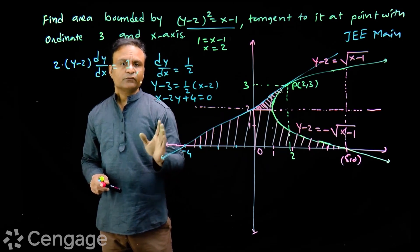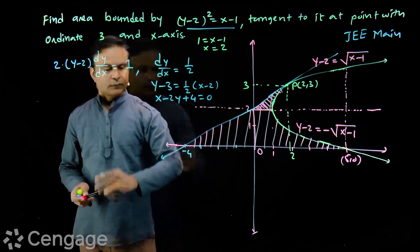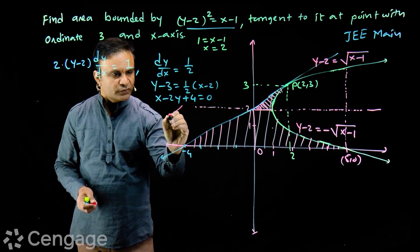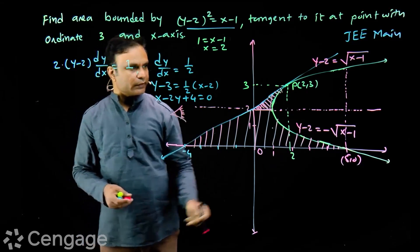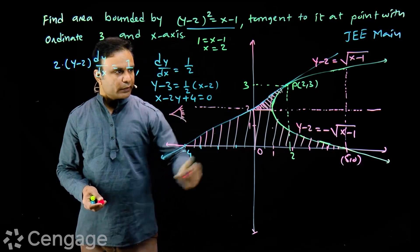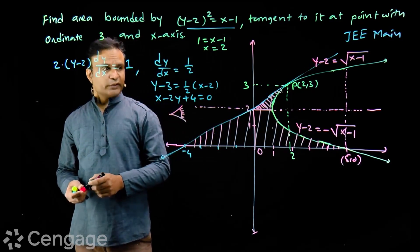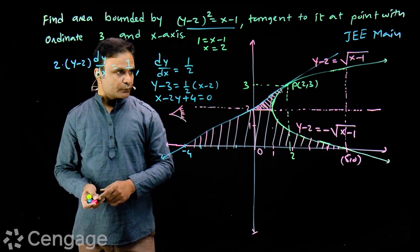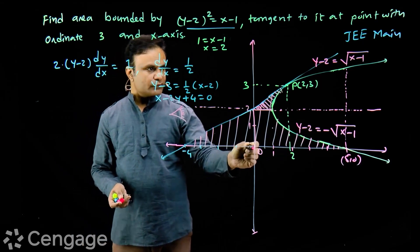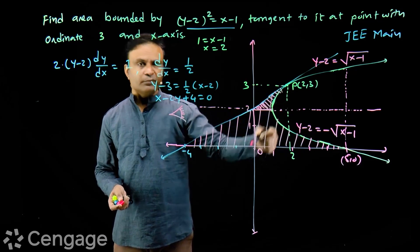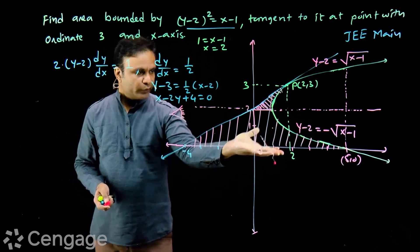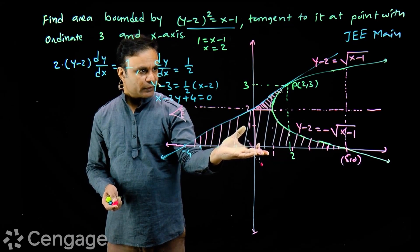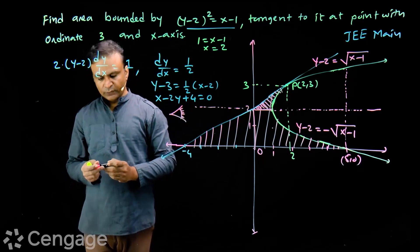For that, we set our observer here. If you look from this side, what will you see as the upper curve? Parabola. And the lower curve is the straight line, which is the tangent. The limits of y are from 0 to 3. This area is bounded with y limits from 0 to 3.